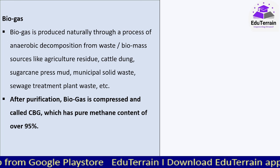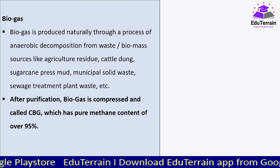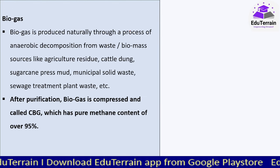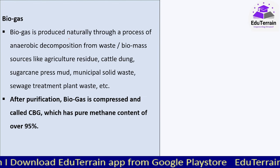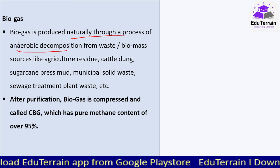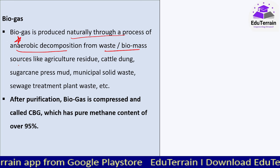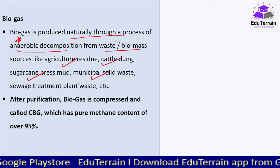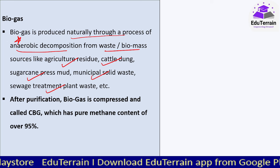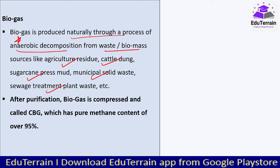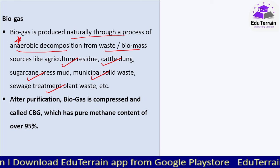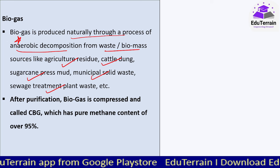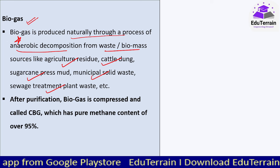Before going further, let us look at two important definitions: biogas and compressed biogas. Biogas is a gas produced naturally through a process of anaerobic decomposition from waste or biomass sources like agriculture residue, cattle dung, sugarcane press mud, municipal solid waste, and sewage treatment plant waste. Anaerobic decomposition means decomposition by microorganisms in the absence of oxygen.